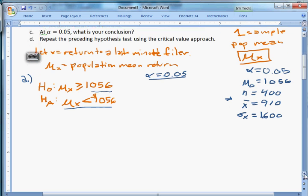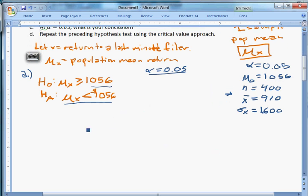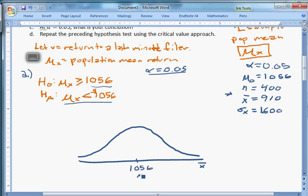And so the way we can do this, we can turn this into a normal distribution question. First, we draw the hypothesized null distribution, null sampling distribution. This is the sampling distribution of x-bar under the null, assuming that the null is true. So in the middle is mu0, which is $1,056. And we know the shape of this now. Sigma x equals $1,600. And we want to know, what's the probability that we would get an x-bar of $910 or lower if the null is true.